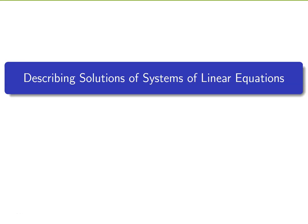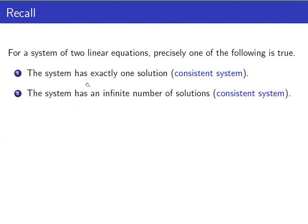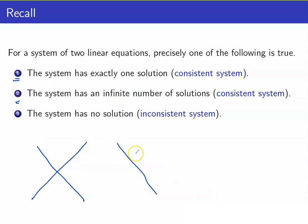In this lesson, we are going to describe solutions of systems of linear equations. Let us recall that for a system of two linear equations, precisely one of the following is true: the system has exactly one solution, it has an infinite number of solutions, or it has no solution. Graphically, two lines intersect for one solution, coincide for infinitely many solutions, or are parallel for no solution.